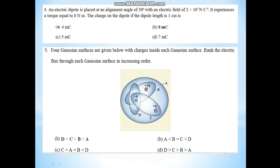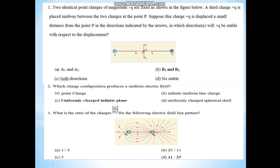The first question: Two identical point charges minus Q are fixed as shown in the figure. A third charge plus Q is placed midway between the two charges at point P. In which direction will plus Q be stable with respect to displacement? The charge can be displaced in other directions.